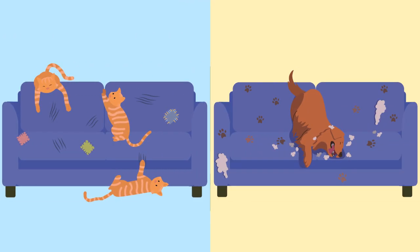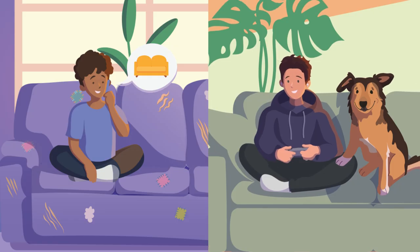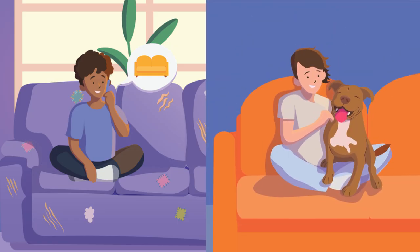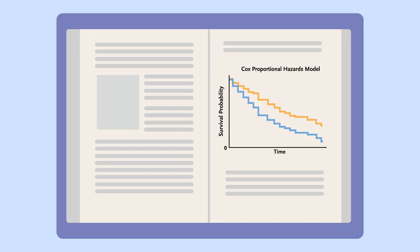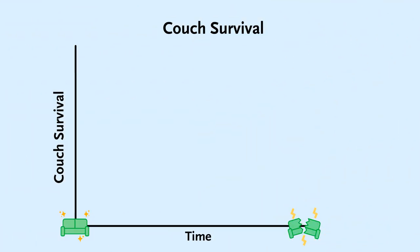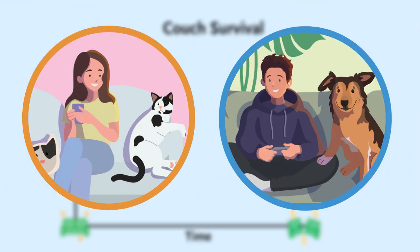You wonder, is this something people with dogs think about too? To get to the bottom of this, you collect data from all your friends with cats and dogs to see which type of pet is harder on the furniture. With your recent stats class in mind, you think this should be a straightforward survival analysis using a Cox proportional hazards model to evaluate the time to event — here, time to pet-induced couch death — for people with cats versus dogs.